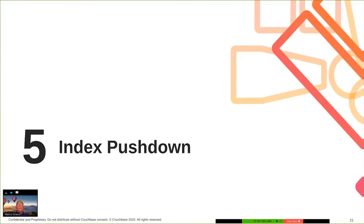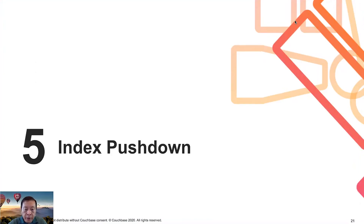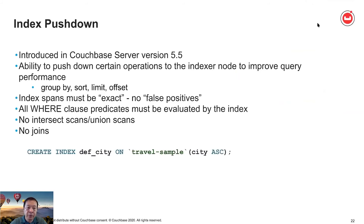With that I'll hand it to Bingji. Thanks Marco. Marco just discussed the basics of explain and how to use metrics and profiling information to diagnose the part of the query running suboptimally. I'm going to switch gear and start talking about a few topics in optimizing your query to make them run faster. The first such topic is index pushdown, first introduced in Couchbase Server version 5.5, which is the ability to push down certain operations to the indexer node to improve query performance.